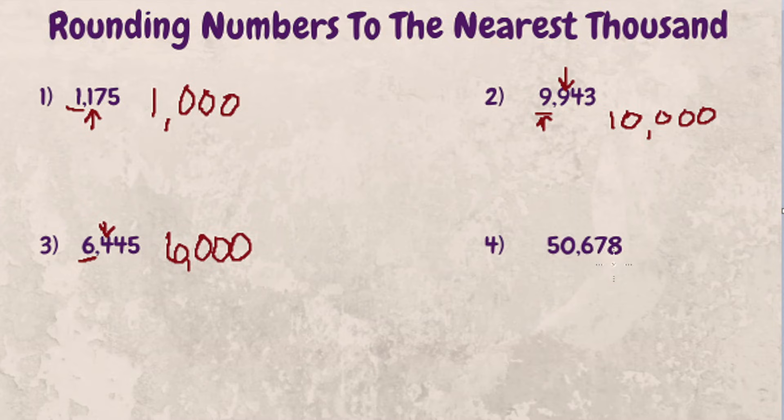Last example, let's round fifty thousand six hundred and seventy-eight to the nearest thousand. Looking for our thousands digit, it's going to be zero.